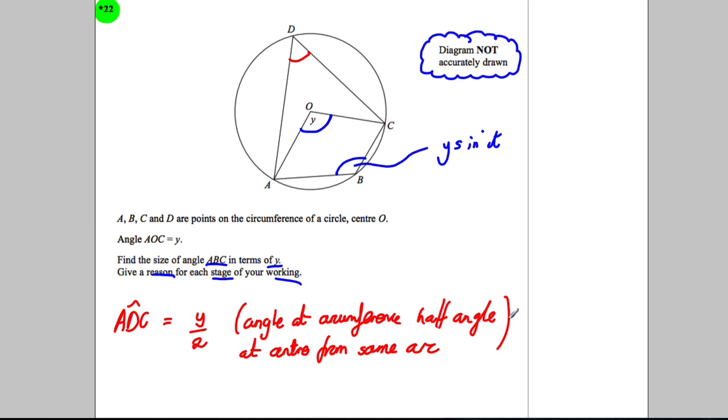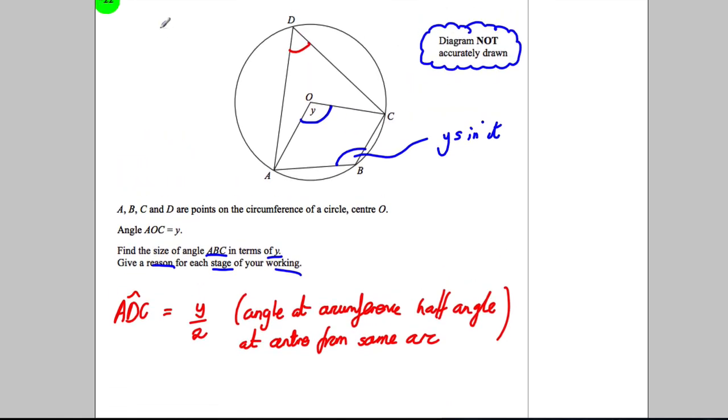Now the other rule you should be able to tell me is about cyclic quadrilaterals. What happens with opposite angles in a cyclic quadrilateral? They add up to 180. So if we know this angle here is y over 2, this one must be 180 subtract y over 2.